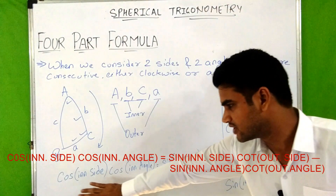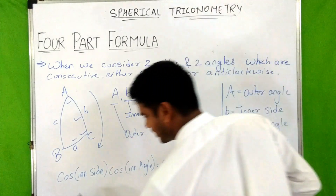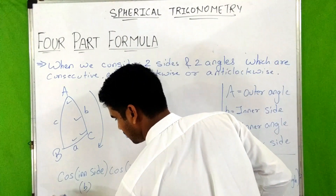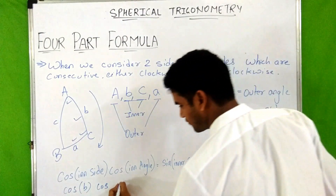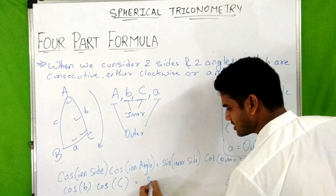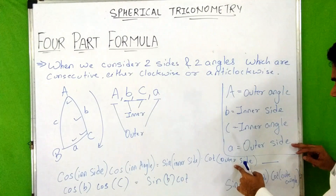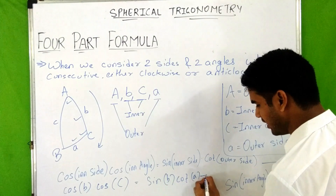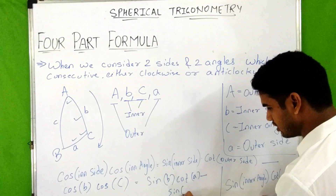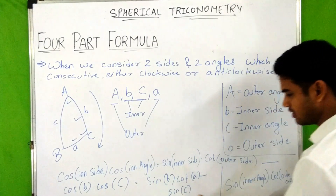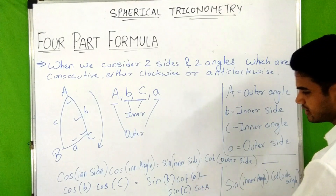Now we put the values. Inner side is b, so we write cos b. Inner angle is capital C, so we write cos C. Then sin(inner side) is sin b, cot(outer side) is cot a. Then minus sin(inner angle), which is sin C, and cot(outer angle), which is cot A.